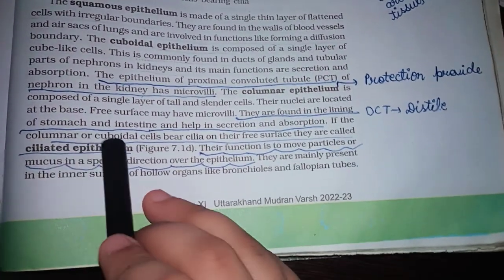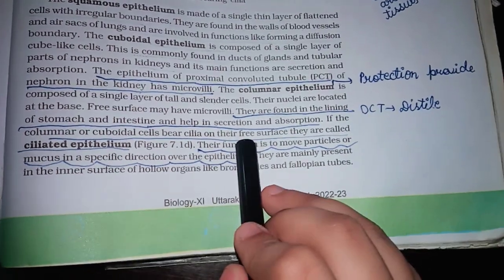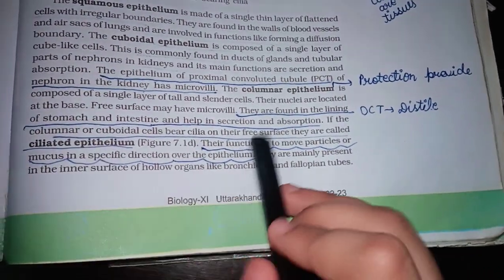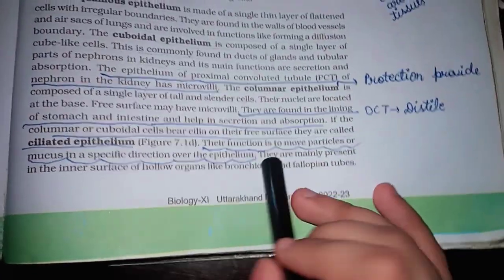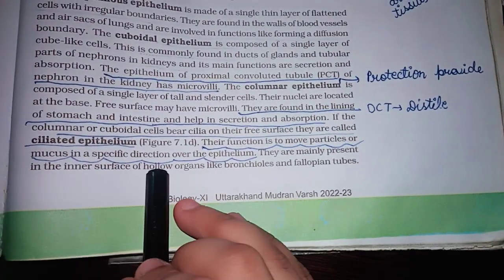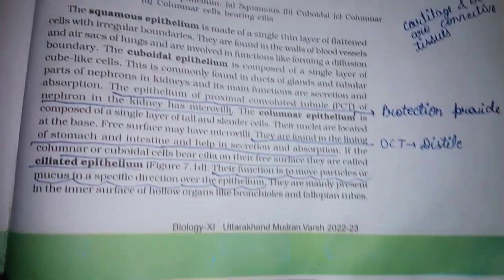If the columnar or cuboidal cells bear cilia on their free surface, they are called ciliated epithelium. Their function is to move particles or mucus in a specific direction over the epithelium. They are mainly present in the inner surface of hollow organs like bronchioles and fallopian tube.